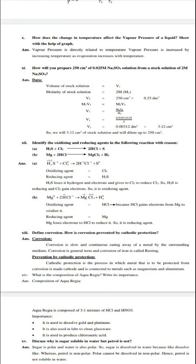Next question: Define corrosion. How is corrosion prevented by cathodic protection? First we define it. Corrosion is the slow and continuous eating of metal by surrounding medium. How can we protect it by cathodic protection? Cathodic protection prevents corrosion.